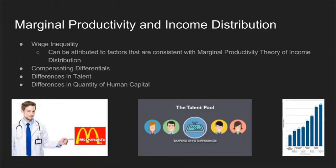Wage inequality is the idea that two people are paid different wages for their jobs. For example, how college graduates are paid more than high school graduates. This inequality can be attributed to factors that are consistent with the marginal productivity theory of income distribution.